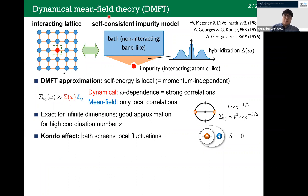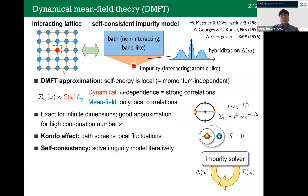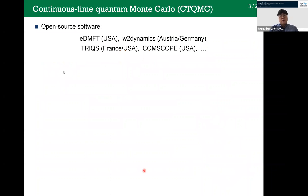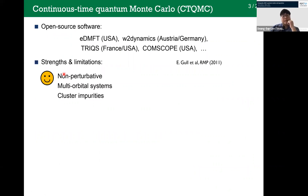DMFT is a type of mean field theory, so we should obtain the self-consistent solution. We achieve this by solving the impurity model iteratively. We call a many-body method that can solve this impurity model — with hybridization function as input and self-energy as output — an impurity solver. The accuracy and availability of DMFT calculations directly depends on the choice of the impurity solver. In general, we need an accurate and generally applicable impurity solver. Among available options, the most popular choice is the continuous-time quantum Monte Carlo method.